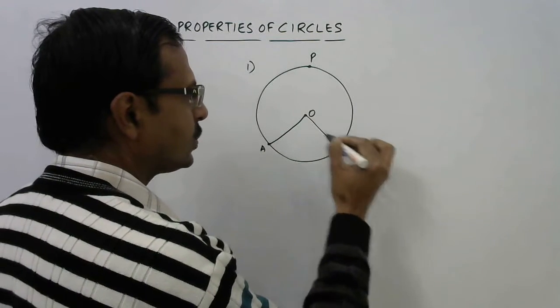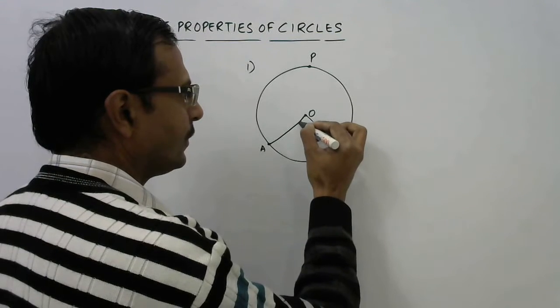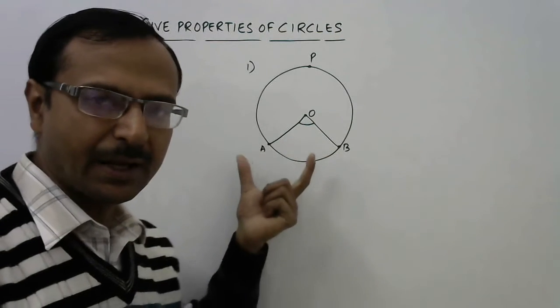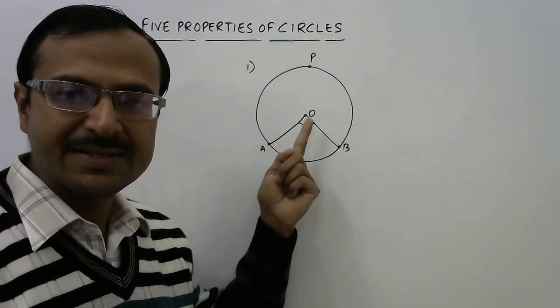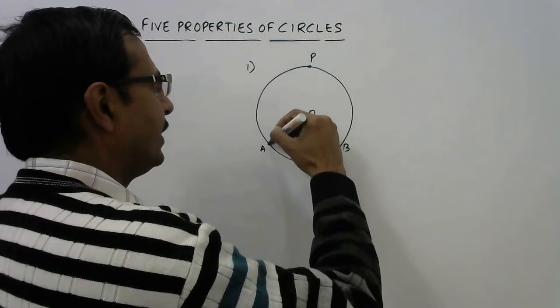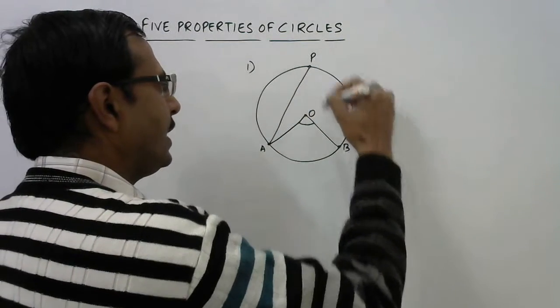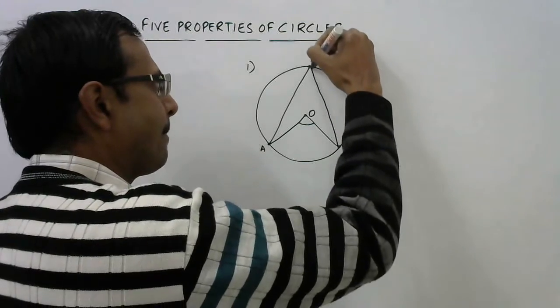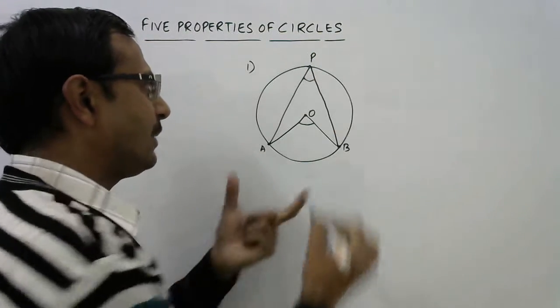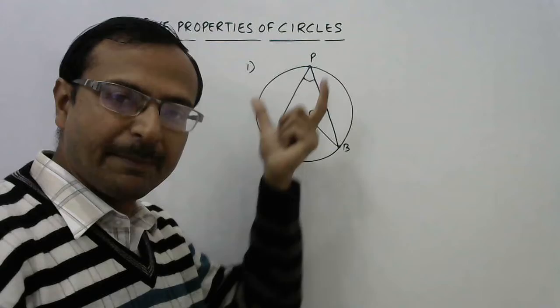I am taking one point in the major segment of this circle and I will join point A to O and point B to O. So this is the angle subtended by the arc ADB at the center of the circle, and if you take AP and BP, this is the angle subtended by this arc in the remaining part of the circle.